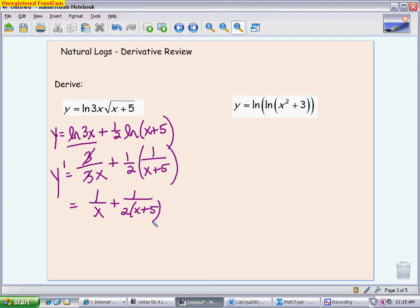The next one is an example of what we call an embedded natural log. We went over this on day 2 of 5.1, where you're taking a derivative of a natural log and you actually get a natural log in your derivative.